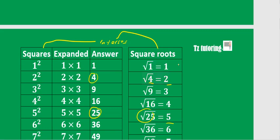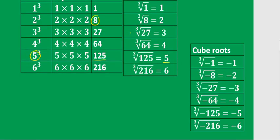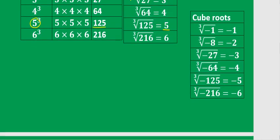The square root of a negative number does not exist — that's very important to remember. So the cube root of negative 1 would be negative 1, and the cube root of negative 64 — just like the cube root of 64 was 4 — the cube root of negative 64 will be negative 4.